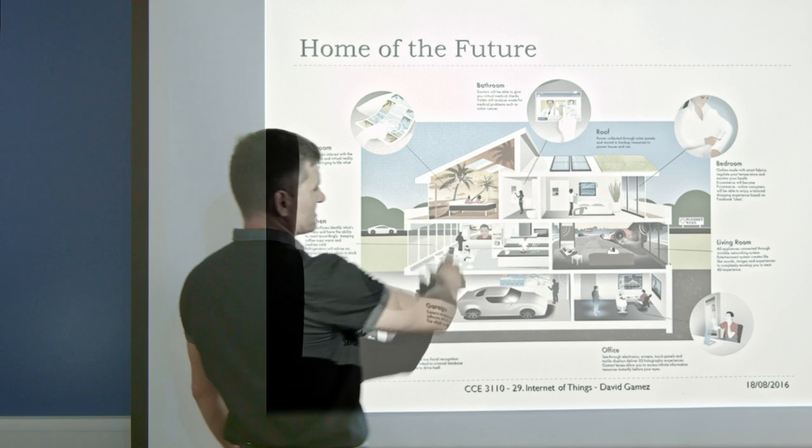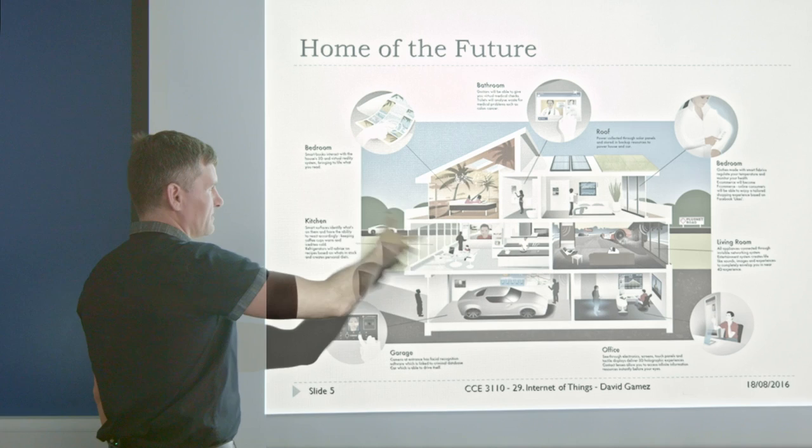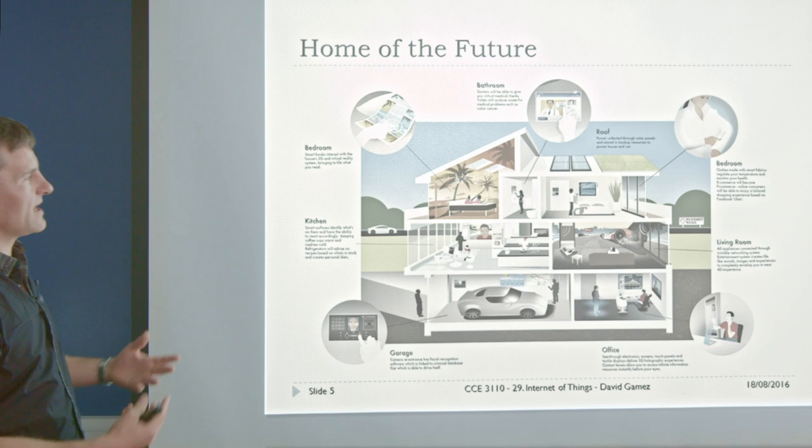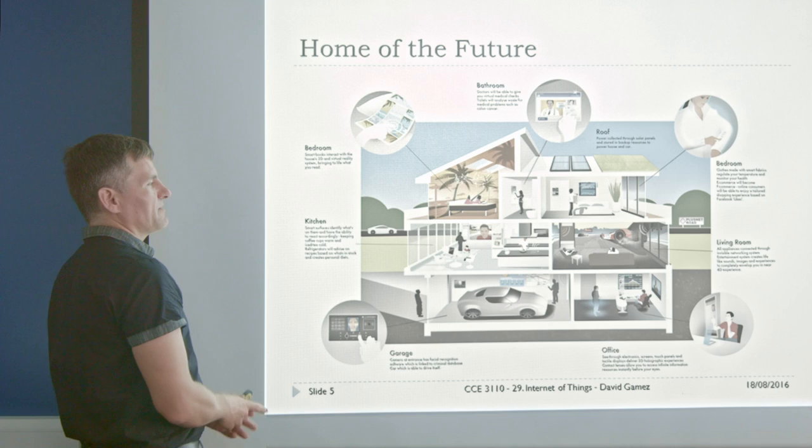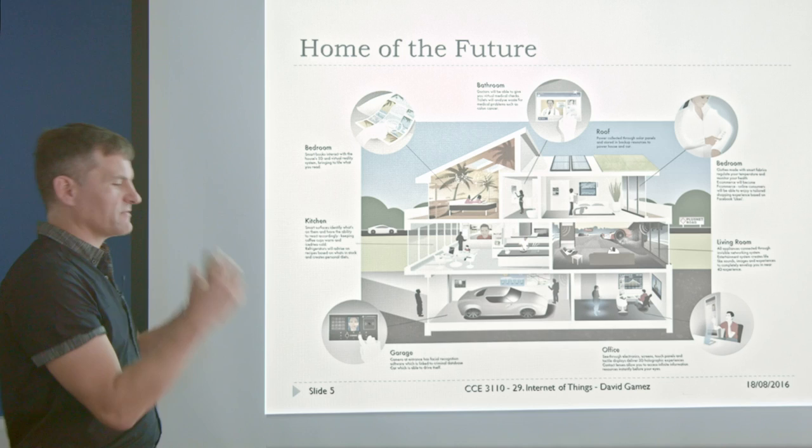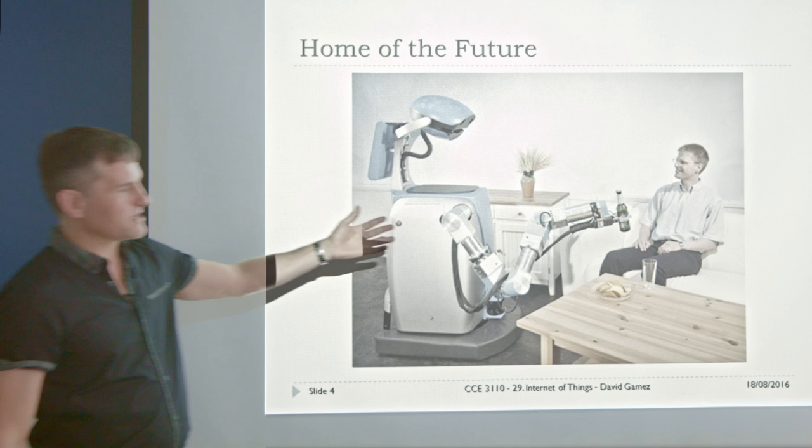Instead of one super-smart robot shuffling around polishing the car, switching the TV on, making breakfast, what we're much more likely to have is a home that's embedded with lots and lots of different bits of smart electronics that are doing a simple, or relatively complicated, task — but a very well-defined task within a specific context.